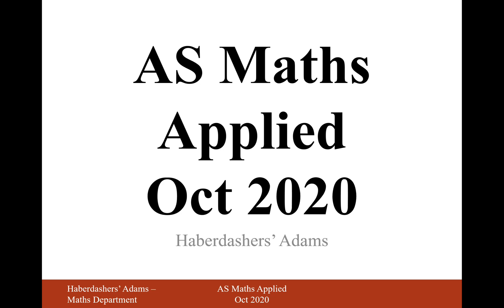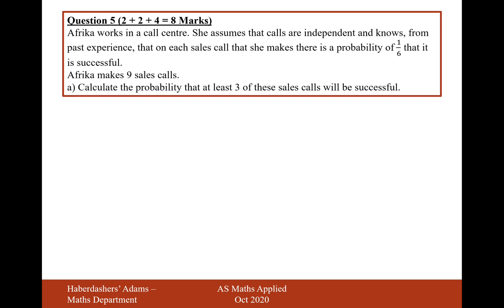Hello there, welcome to the October 2020 Applied Paper. Here we're looking at question 5. Africa works in a call centre. She assumes that calls are independent and knows from past experience that on each sales call that she makes there is a probability of 1 in 6 that it is successful. Africa makes 9 sales calls. Calculate the probability that at least 3 of these sales calls will be successful.